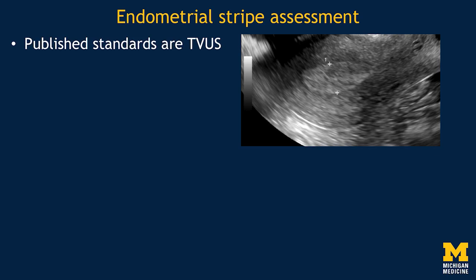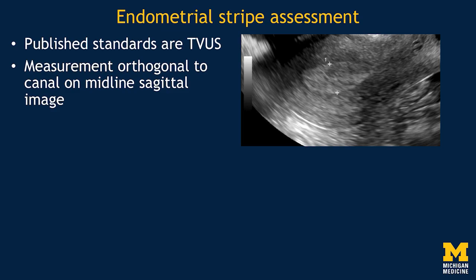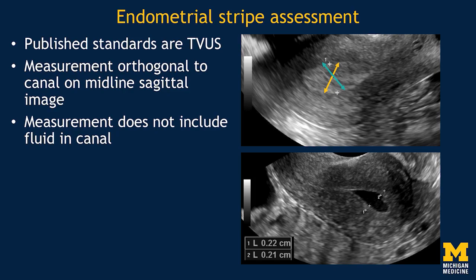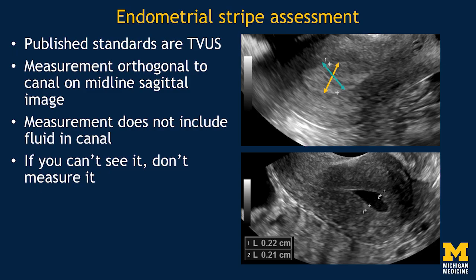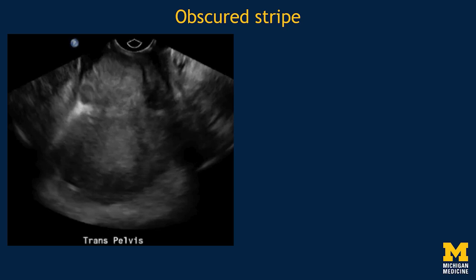Let's talk about the endometrial stripe itself. All the published standards and thresholds we discuss are for transvaginal, not transabdominal ultrasound. The measurement needs to be made orthogonal to the endometrial canal on a midline sagittal image. The measurement should not include fluid in the canal if present — calipers should be placed just on the tissue on either side of the fluid. If you can't see the canal, don't measure it.